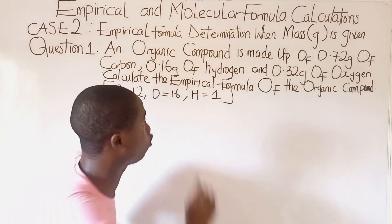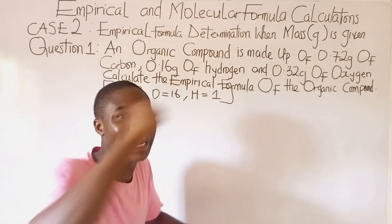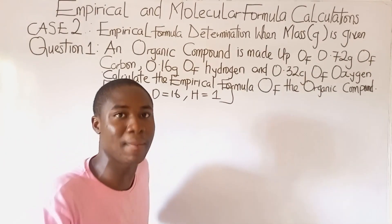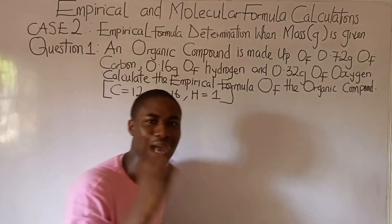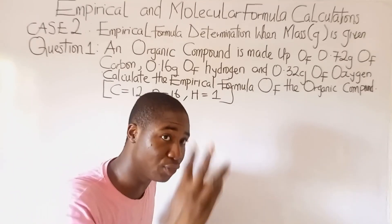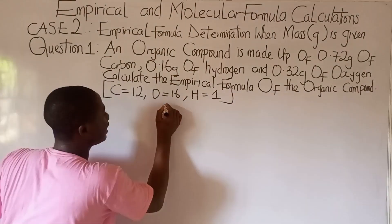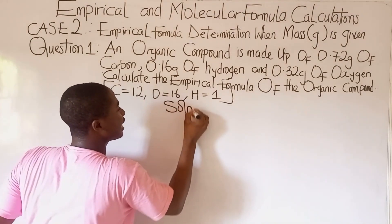First of all, what we have to do is basically bring out the elements involved forming this organic compound. How many elements are here? Three elements. And what are they? These are the elements.